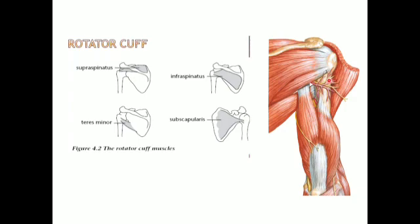This shows the deltoid and the axillary nerve in relation to the shoulder joint. When inferior dislocation of the shoulder joint occurs, there is a likelihood of injury to the axillary nerve — this can also happen in fractures of the surgical neck of the humerus, as the nerve is closely related to it. This nerve mainly supplies the deltoid, so once injured, the deltoid becomes paralyzed. The main action of the deltoid is abduction from 15 degrees to 90 degrees.